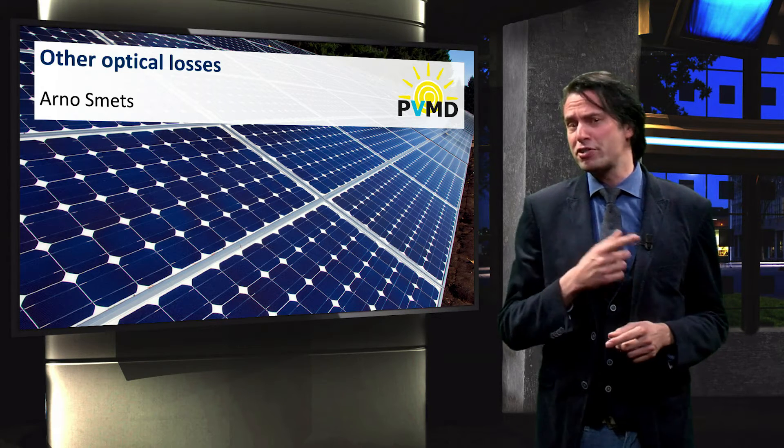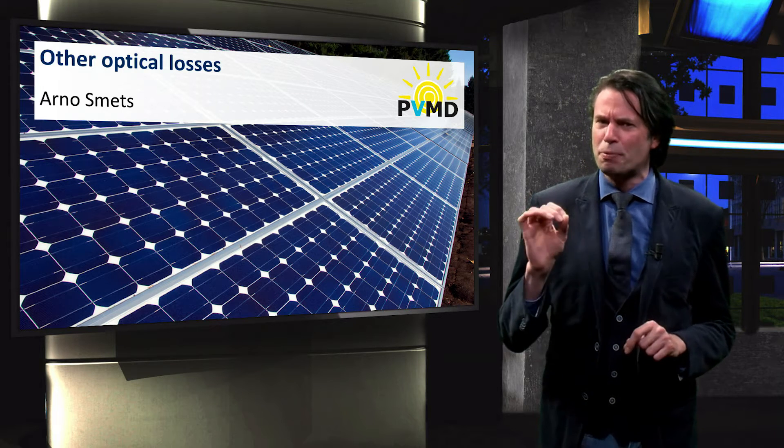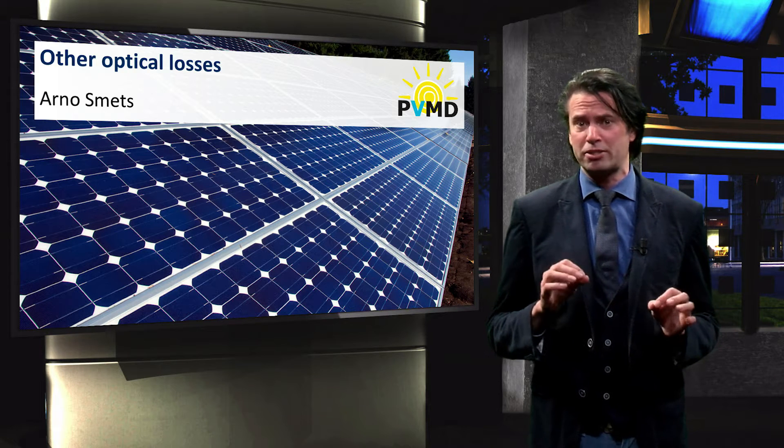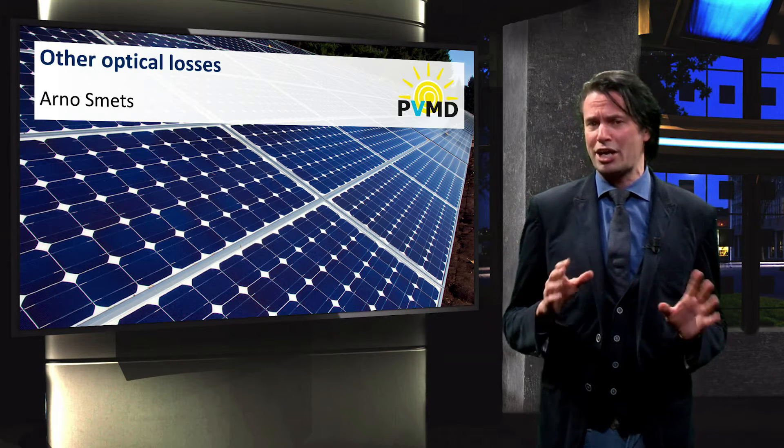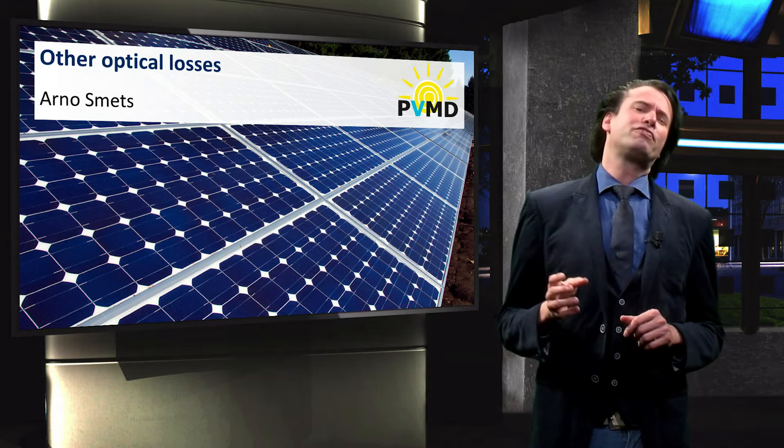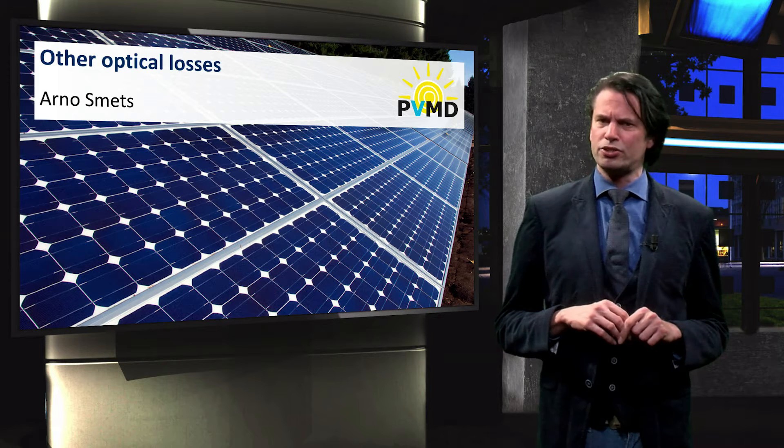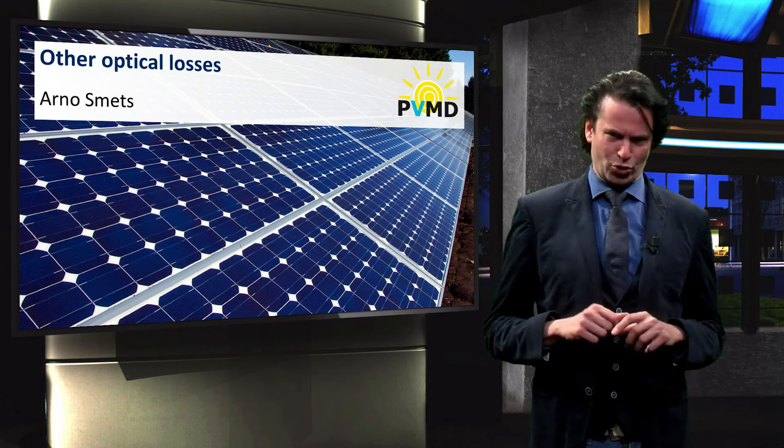In the previous video we found however that there is a fundamental theoretical limit to the fraction of the available spectrum that a solar cell can utilize. In this video we will look into the other optical loss mechanisms that further limit the optical performance of a solar cell.